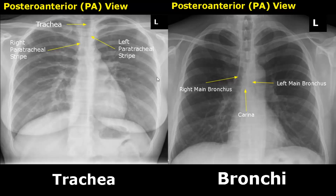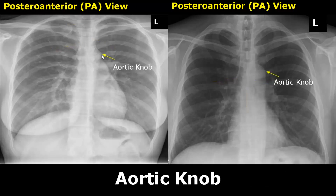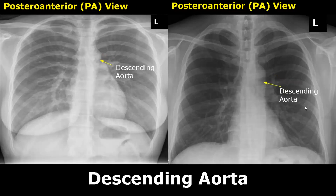The aortic knob contains the aortic arch. It can be seen bulging laterally here. The aortic knob further continues as the descending aorta, which is seen below the aortic knob at this point right here.